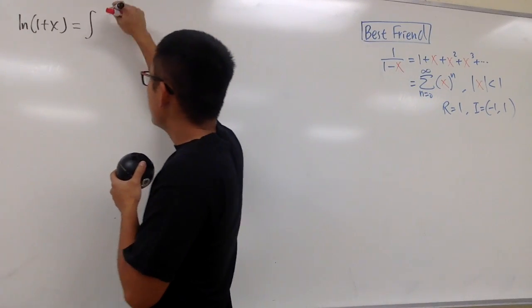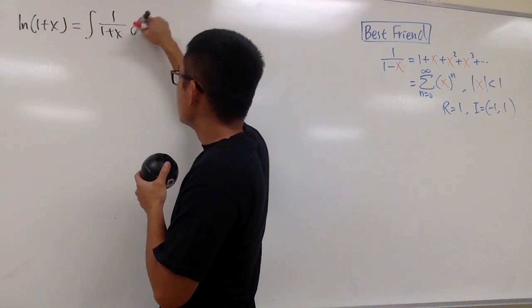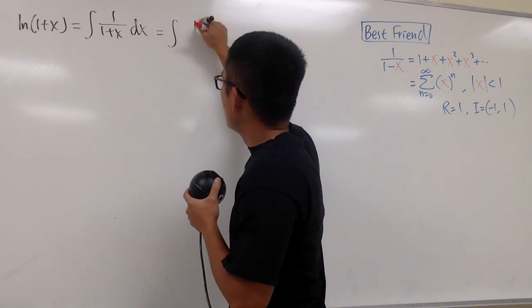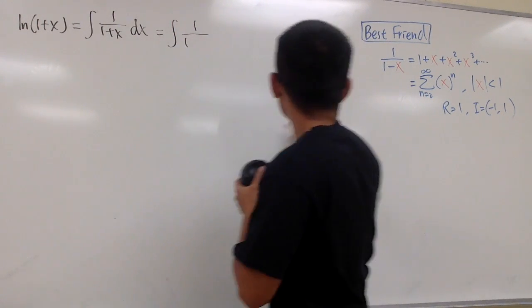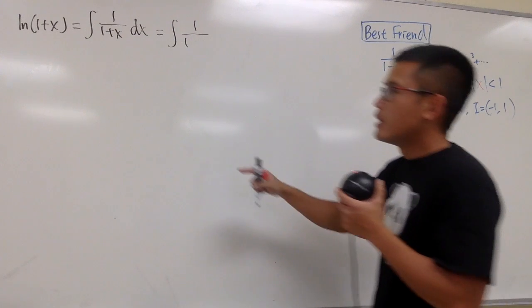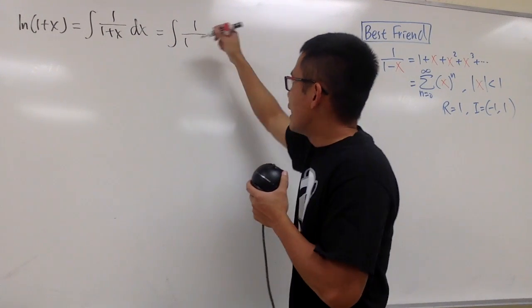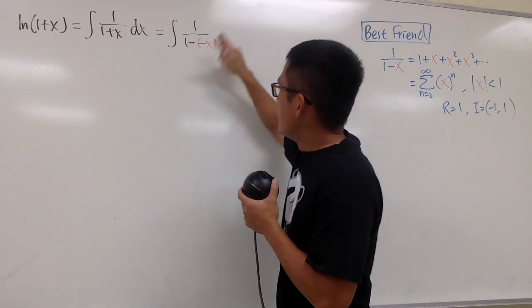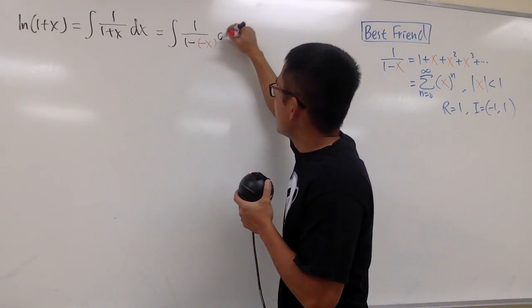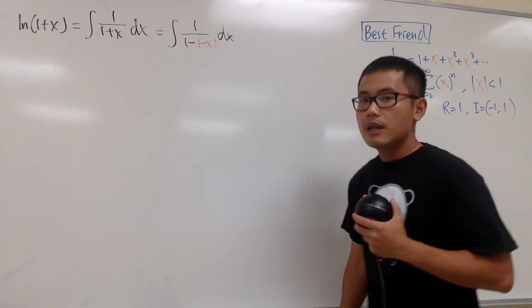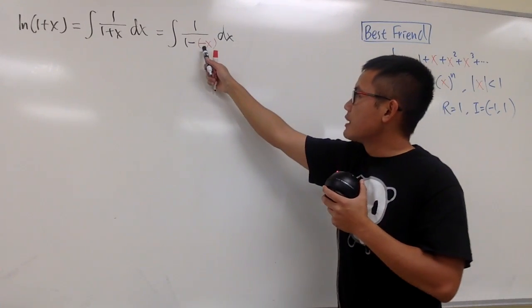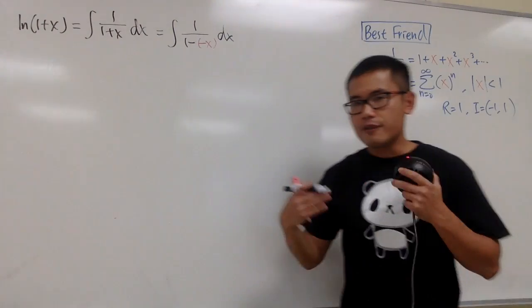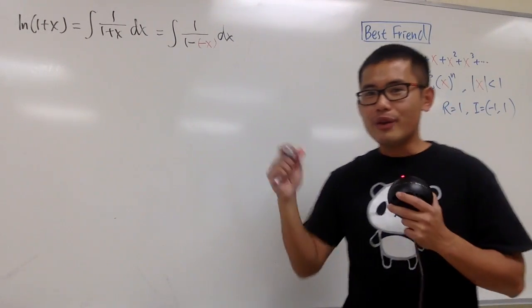This is the same as integrating 1 over 1 plus x dx. We need to match this to our best friend, 1 over 1 minus something. Instead of plus x, we look at that as minus negative x. This will be our new input. From here, we can just plug in negative x into all the x's to find the power series for 1 over 1 plus x.